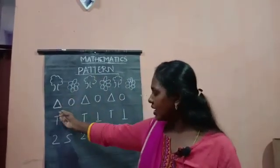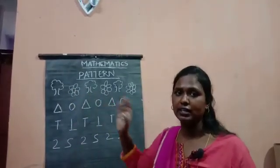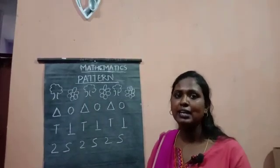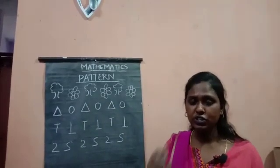Triangle, circle, triangle, circle - not triangle, circle, circle, triangle. It is one after the other, repeating the same. So here we have used only two shapes.